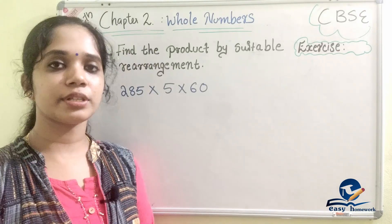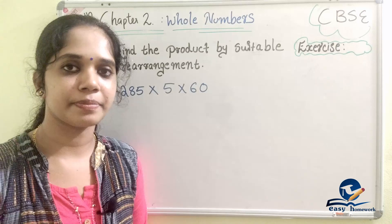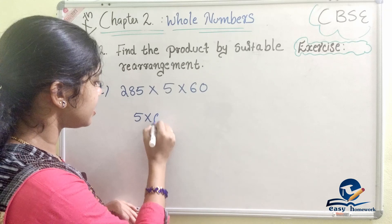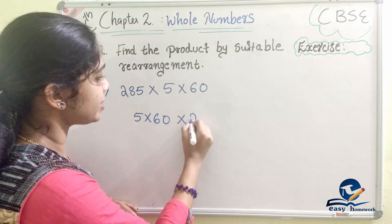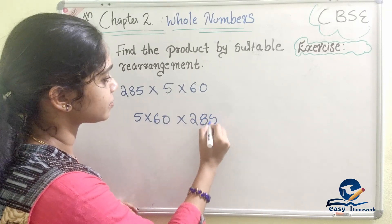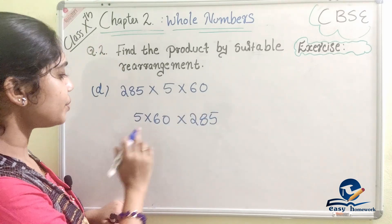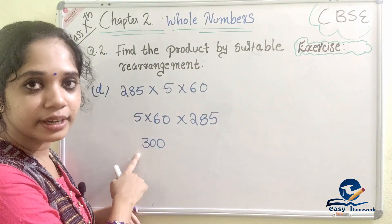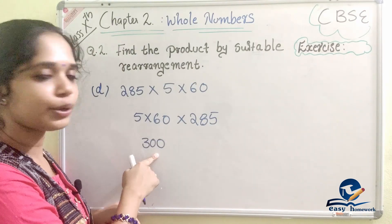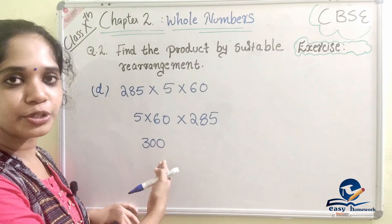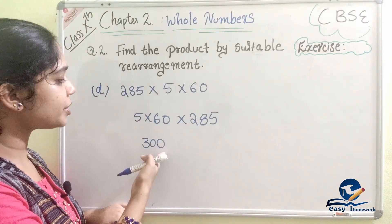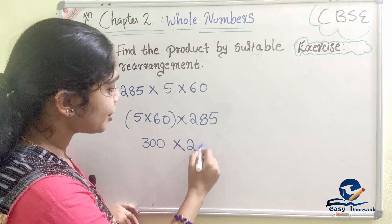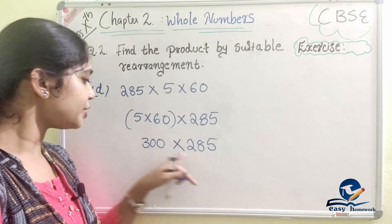Next question: 285 × 5 × 60. Applying the commutative property, we rearrange to 5 × 60 × 285. Then 5 × 6 = 30, giving us 300. We change the multiplication and look at the unit place. So we now have 285 × 300, which we can write as 285 × 3.